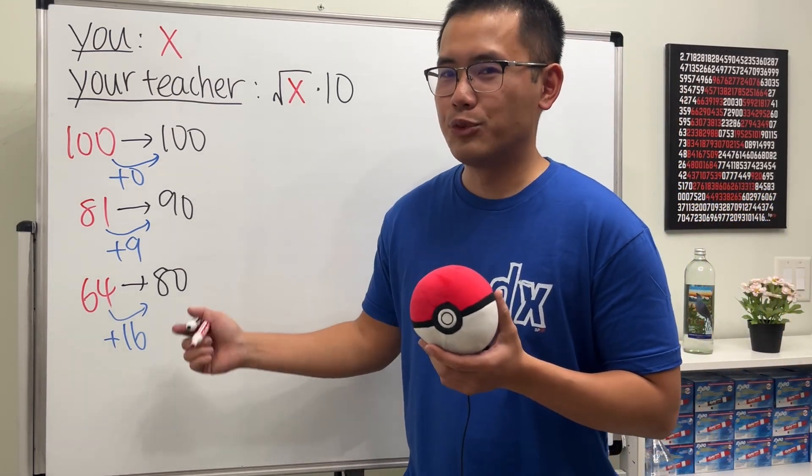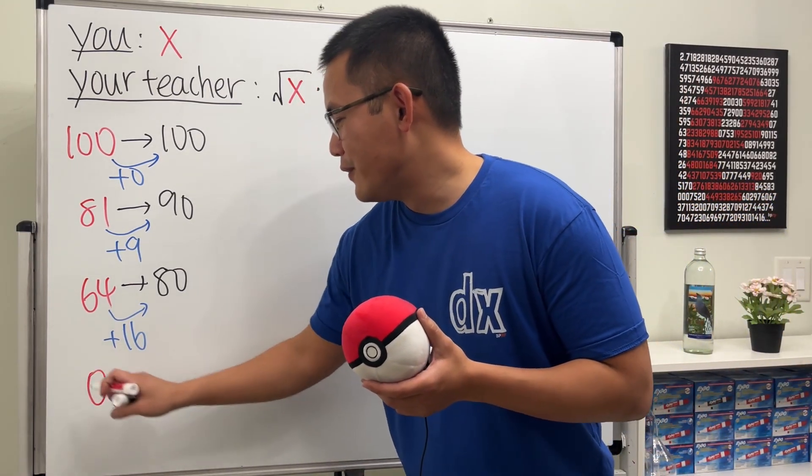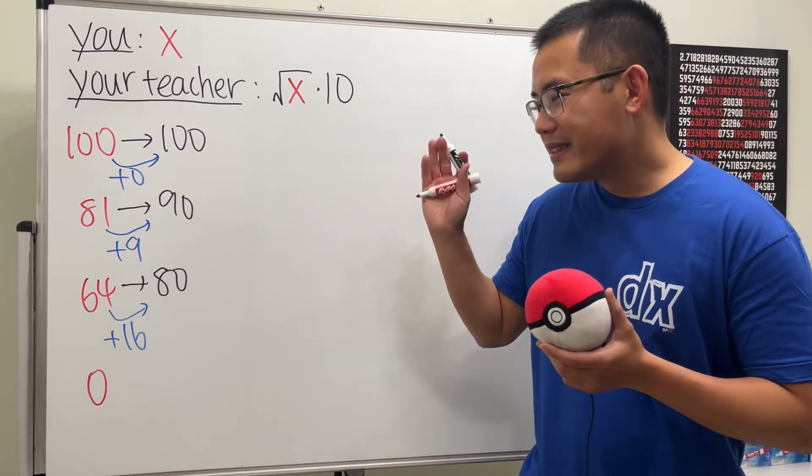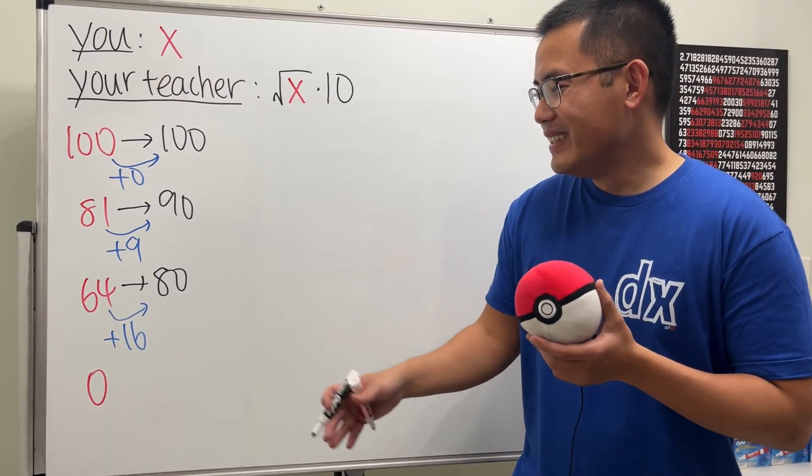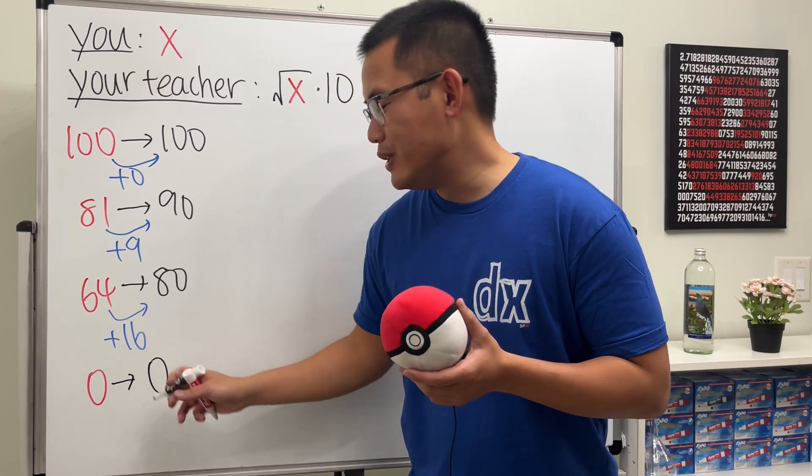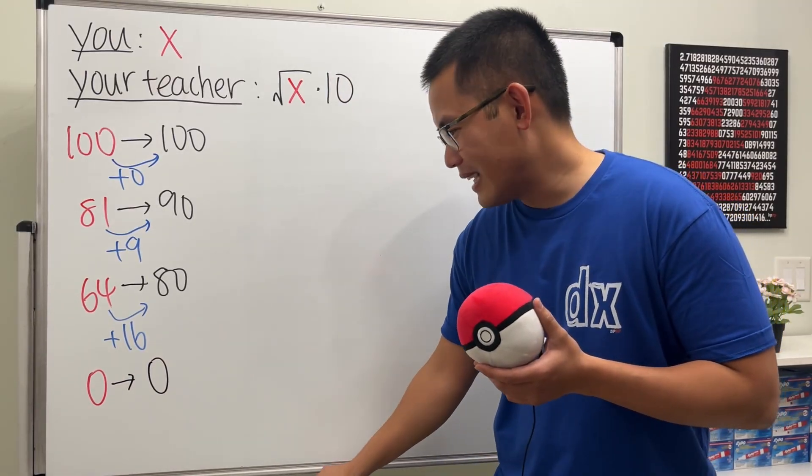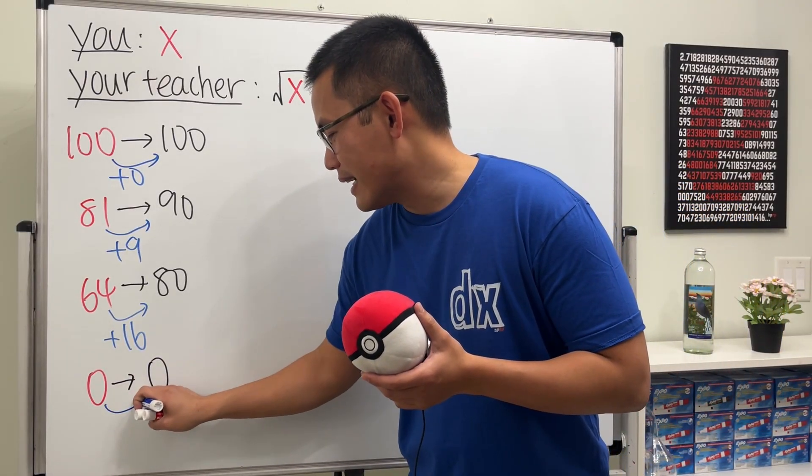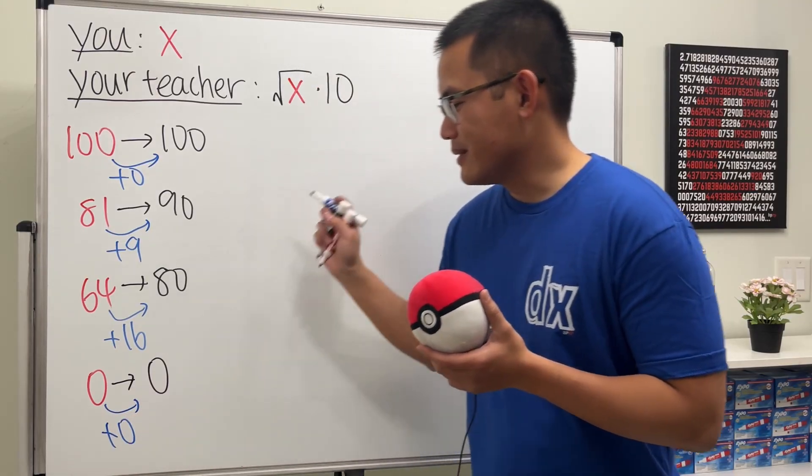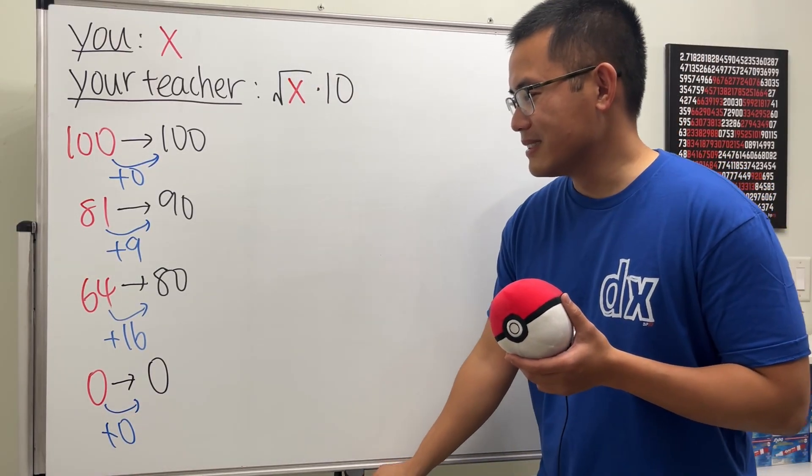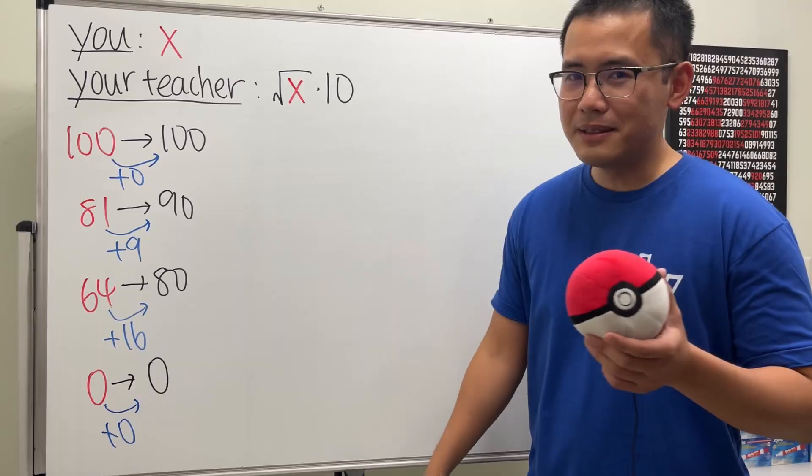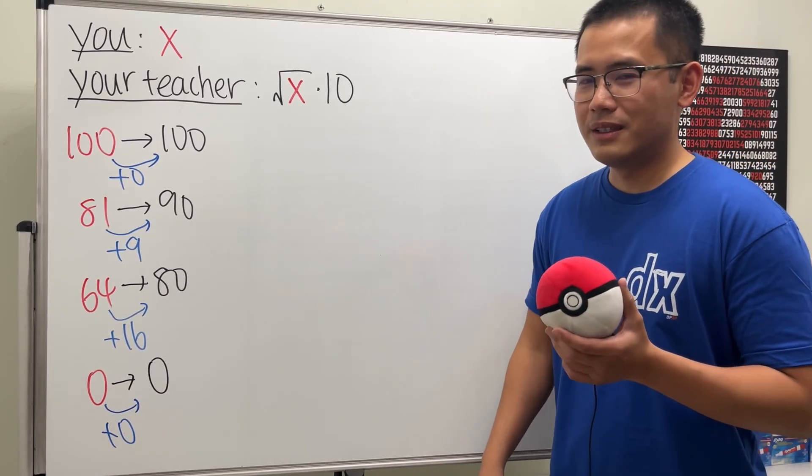Because let's take a look at the extreme example. And that is, if we score 0, well, take a square root of 0, you still get 0, and you multiply by 10, guess what? You still get 0. So in this case, you didn't gain any points under this policy. 0 times anything is always 0, right? Except for infinity, but that's a different story.